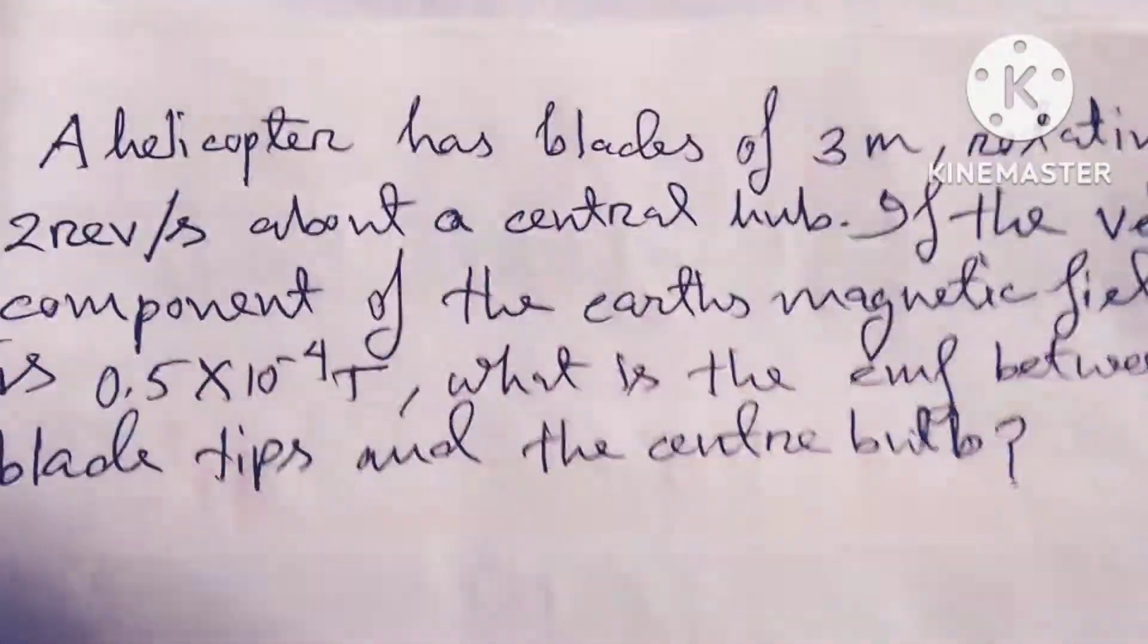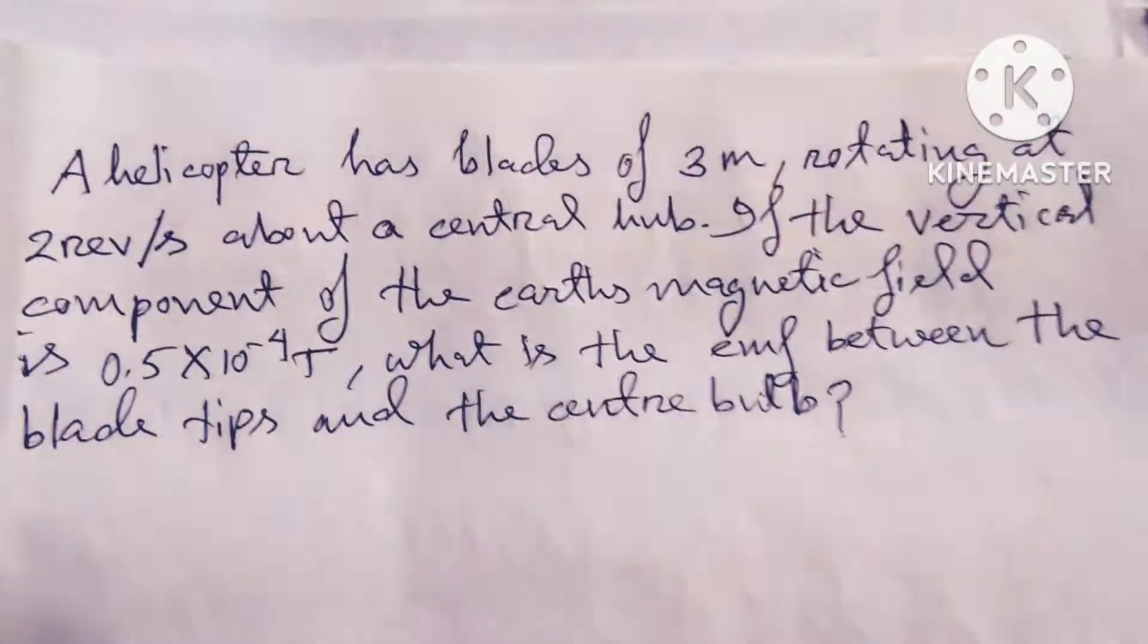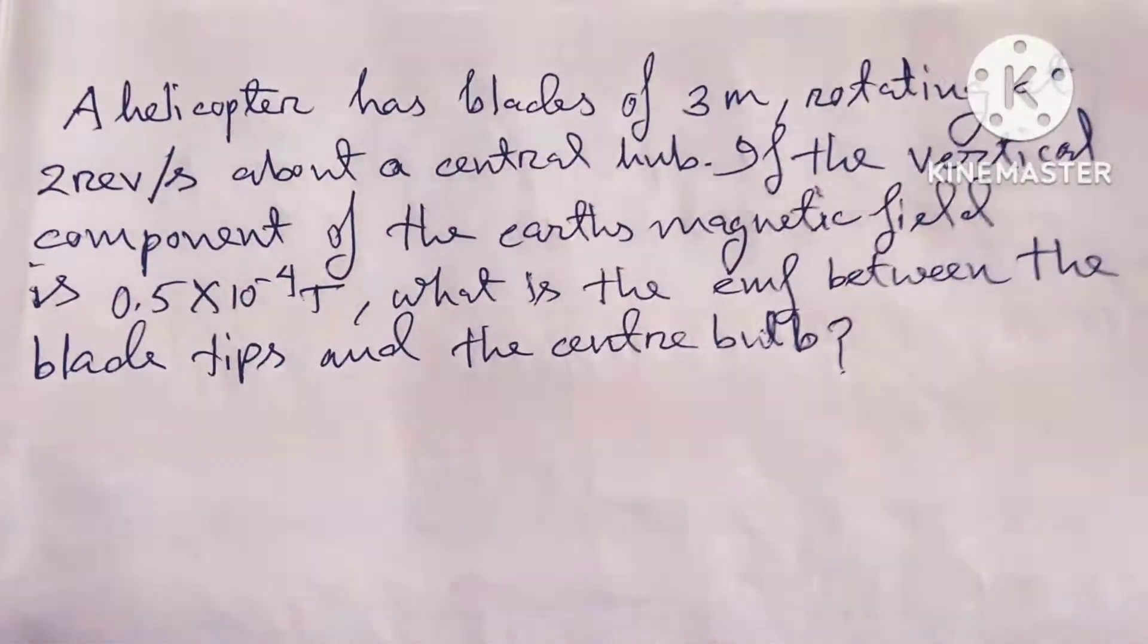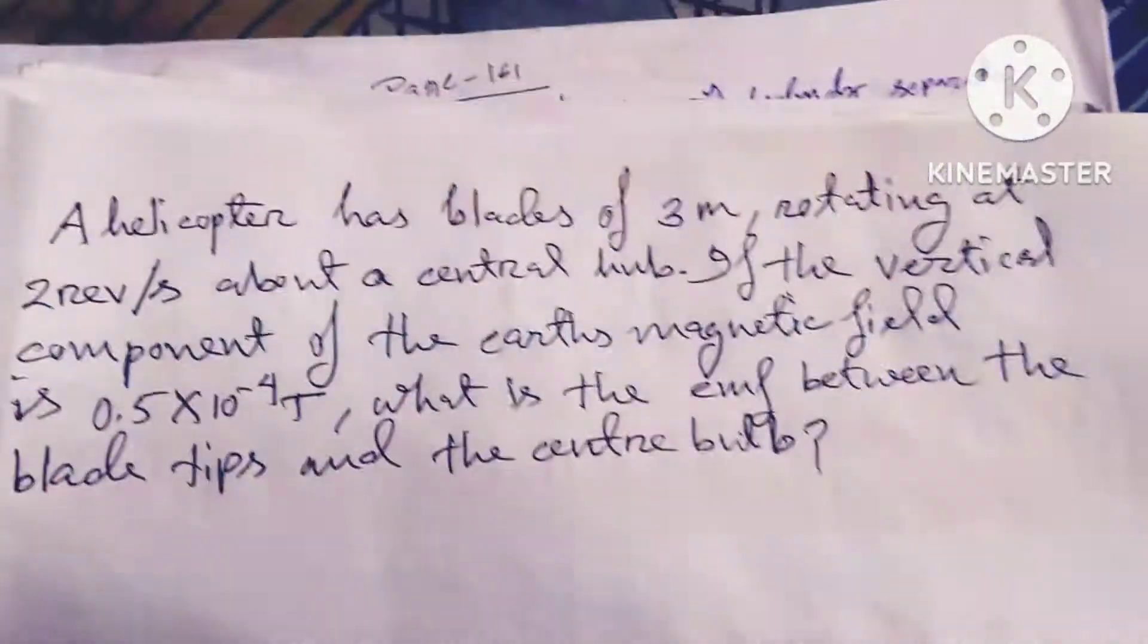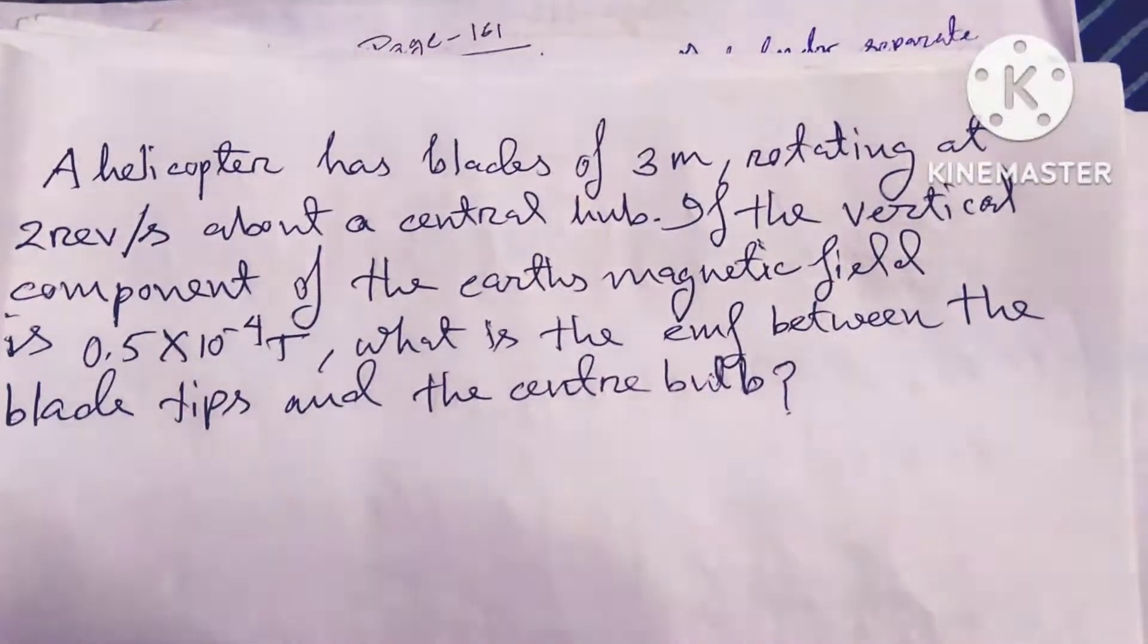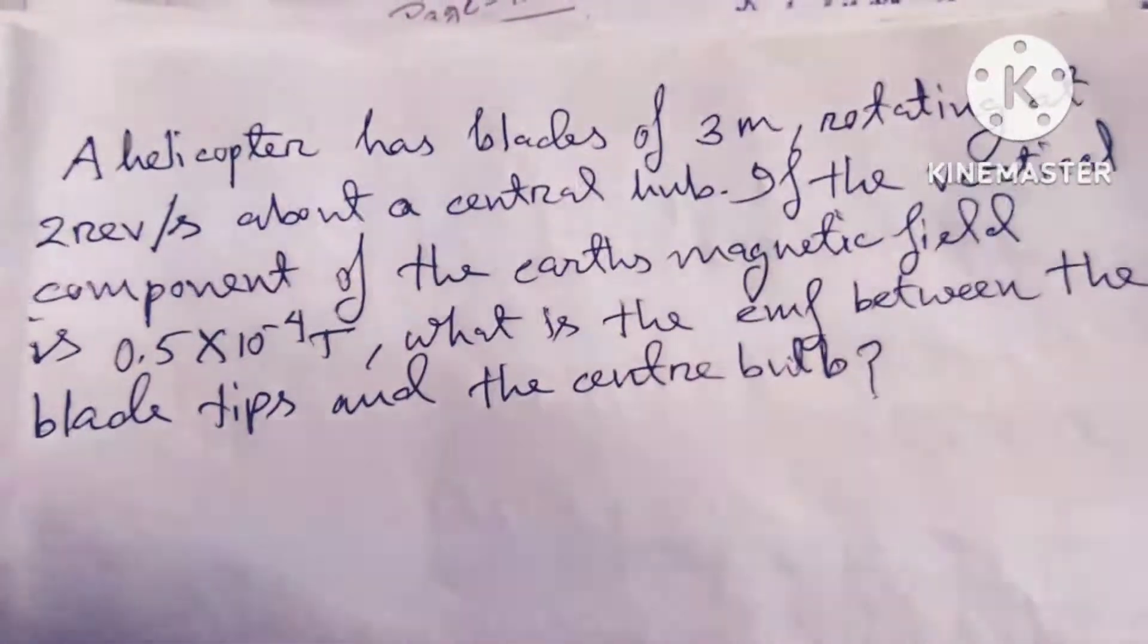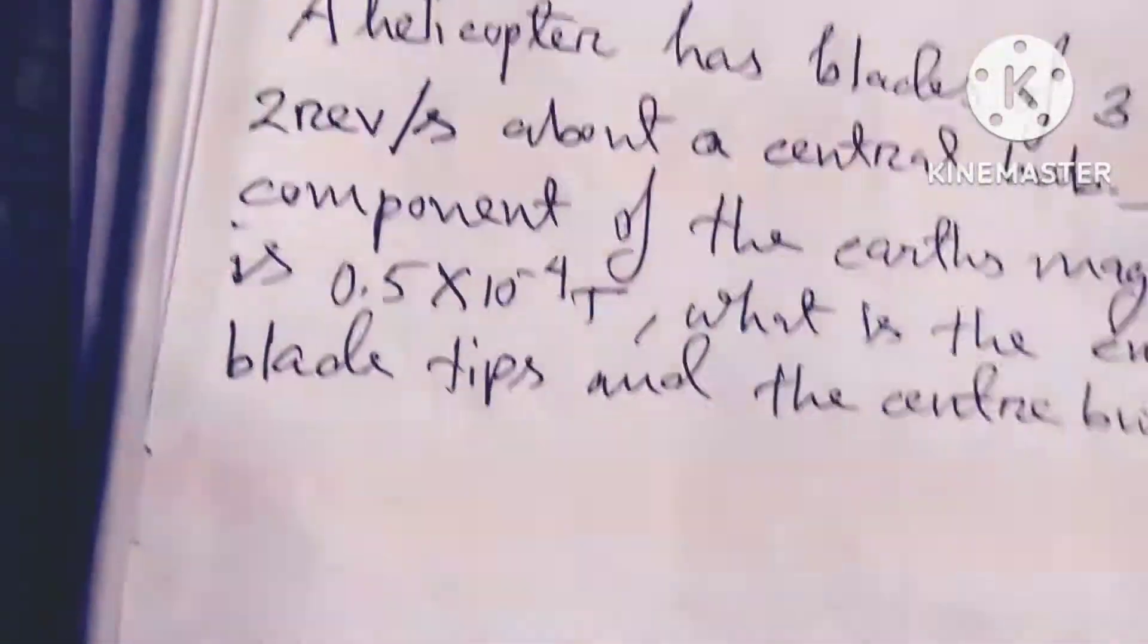Hello dear friends, welcome to my channel. A helicopter has blades of 3 meters rotating at 2 revolutions per second about the central hub. If the vertical component of the Earth's magnetic field is 0.5 × 10⁻⁴ Tesla, what is the EMF between the blade tips and the central bulb? So friends, the problem is based on Lenz's law.